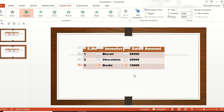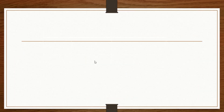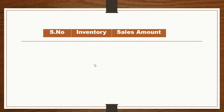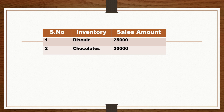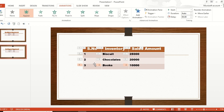Now you have selected each row and set up four animations, one by one. Go to Presentation View. It will show the slide, and each time you click, the first row appears, then the second row, then the third row, and the fourth row. This is how you do row-by-row animation.